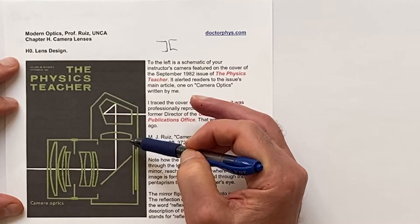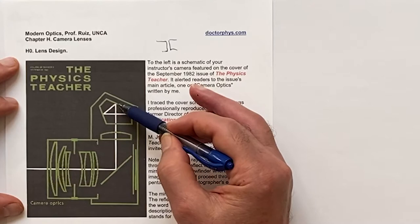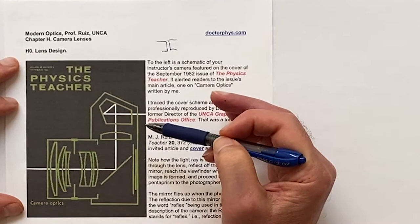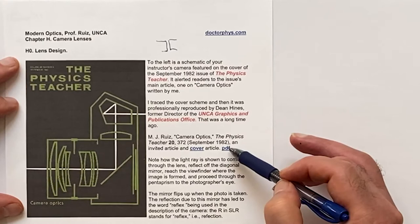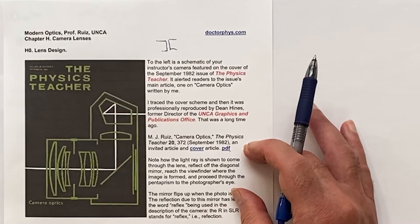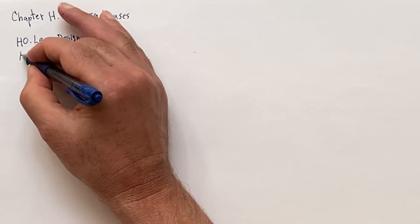The camera has a pentaprism up here that reflects in the other dimension — that's your SLR for short. We're going to look at different lenses for the camera. I hope you get a chance to look at the PDF file for this paper that was published a long time ago. We'll look at some of the concepts today, and the first section will deal with close-up photography.